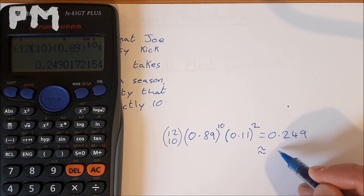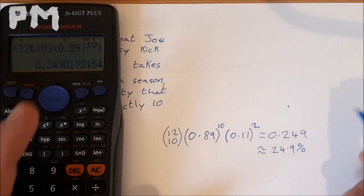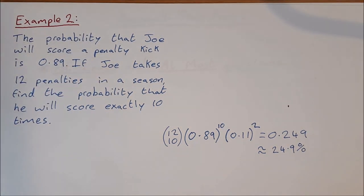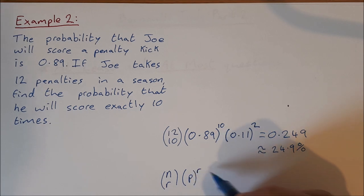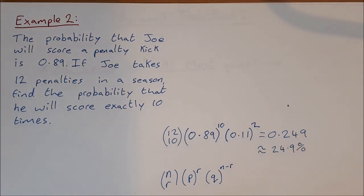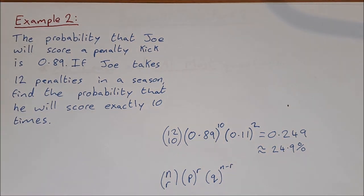Okay, which is approximately equal to 24.9%. So if he has a 0.89 chance of scoring a penalty, the probability that he'll score exactly 10 times is 24.9%. And let's just take this back to the formula just to match it up. So the formula is N choose R times the probability of P to the power of R times the probability of Q to the power of N minus R. So in this case, N was 12, R was 10, P was 0.89, and Q was 0.11. So you can use the formula if you like. I just prefer to reason through the question and build it like that kind of organically.